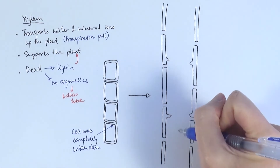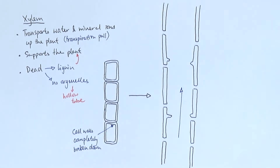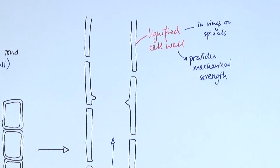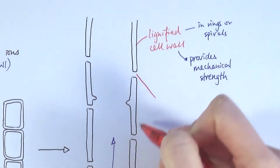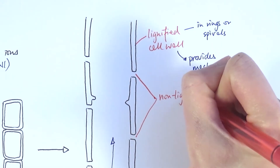Water generally moves up the xylem, and it will be able to move out of the xylem to surrounding cells if necessary. The cell wall itself is lignified, and the lignin can exist in rings or in a spiral — we often see these particular shapes when we look at the lignin under the microscope. The lignin provides mechanical strength to the xylem to withstand the high pressure in the transpiration stream. Sometimes we can have specific pits in the xylem wall, and these are what we call the non-lignified pits.